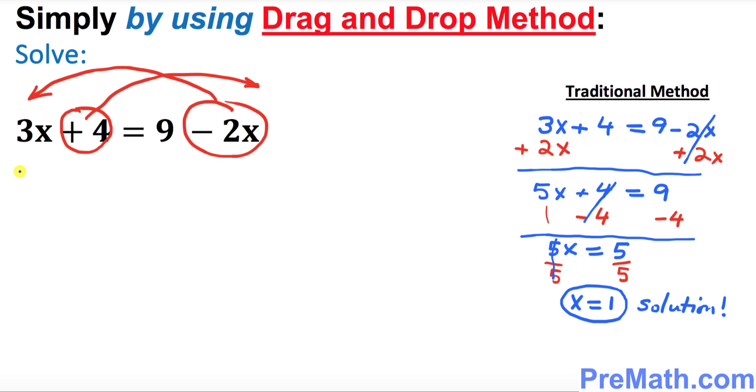So 3x is already there, just leave it there. When you move this -2x on the other side of this equation you must change the sign. Negative becomes positive and positive becomes negative. So that's gonna become +2x.